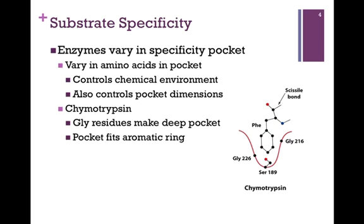Let's look first at the example of chymotrypsin. The specificity pocket has been outlined for us in red. As you can see, there are glycine residues on the sides of that pocket. And of course glycine is the smallest amino acid, and that gives us the largest dimensions on the pocket. That allows us to accommodate large aromatic rings, such as phenylalanine. You'll notice that there's a serine residue at the bottom of the pocket, and although serine is a polar amino acid side chain, yet there's no charge there so as to repel the very non-polar phenylalanine side chain.